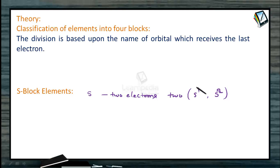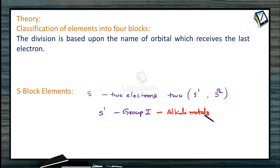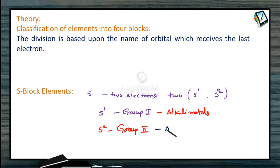In the periodic table, you can see two groups on the left-hand side. The first comes under the S1 category, that is Group 1, usually called alkali metals. The next group, where the electron enters the same S block with an S2 configuration, is Group 2, generally called alkaline earth metals.